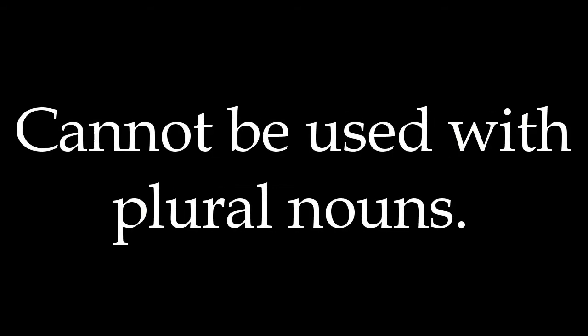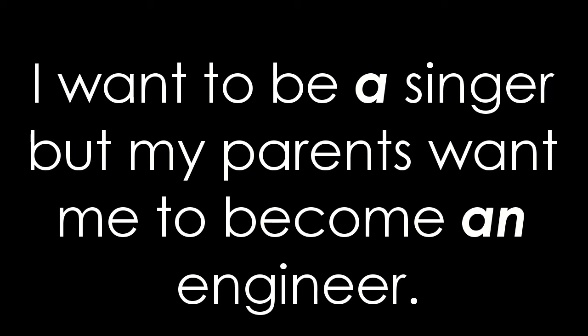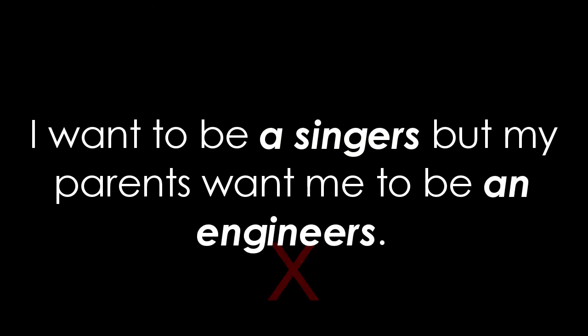We cannot use an article with a noun in its plural form. For example, we can't say 'I have a friends in Silvasa.' Let's take another example: 'I want to be a singer, but my parents want me to become an engineer.' Articles are used with the nouns 'singer' and 'engineer', both in singular form. It would be incorrect to say 'I want to be a singers, but my parents want me to be an engineers.'